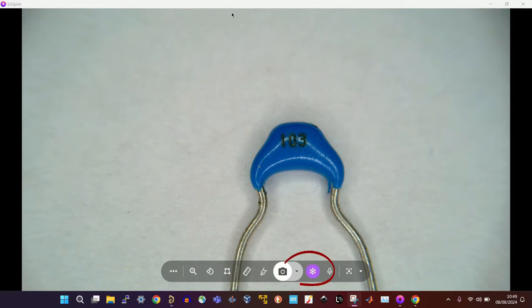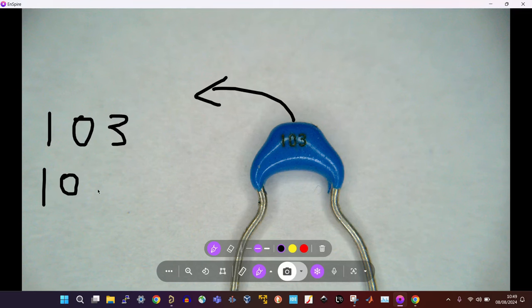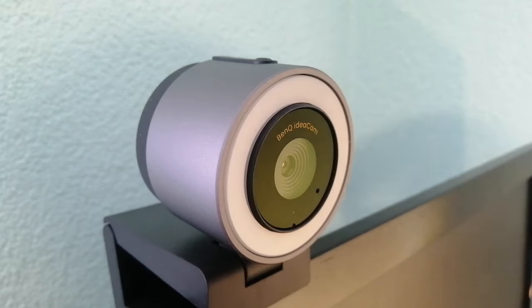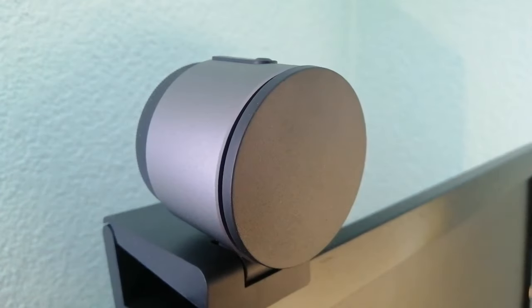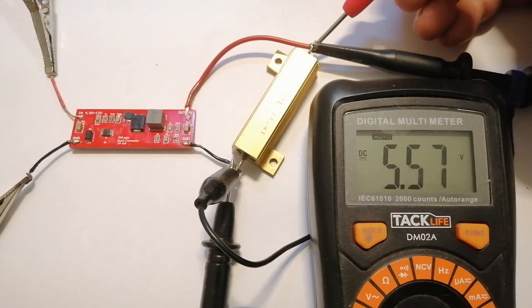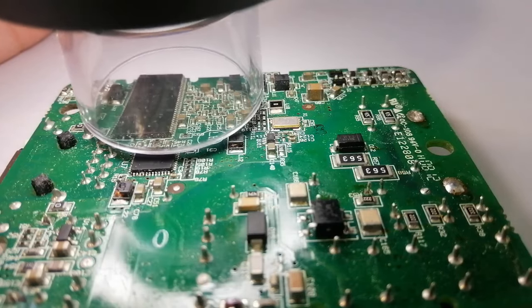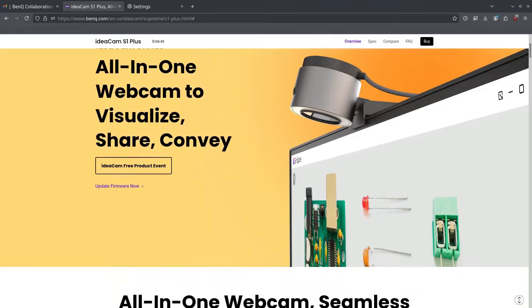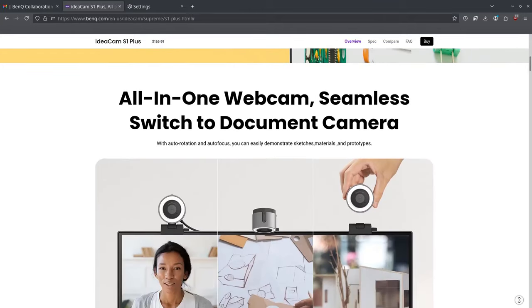Another button allows you to freeze the image at any moment so you can take your time and explain whatever you need to. There's also a privacy cover that you can snap on magnetically whenever you're not using the camera to cover and protect the lens. So whether you want to give great presentations, create DIY YouTube videos, or explore the tiny details of your projects, check out the Ideacam S1 Plus with the links in the description.